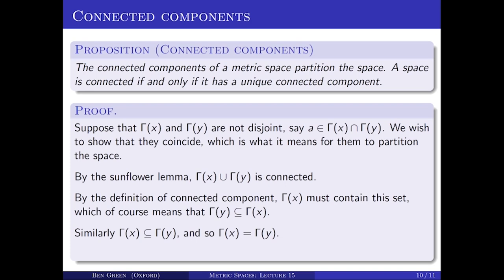A space is connected if and only if it has exactly one connected component — equivalently, if and only if the maximal connected subset containing every point is the whole space. That concludes the discussion of connectedness. We'll turn in the next lecture to the somewhat different notion of path connectedness, and then talk about how those two concepts are related.